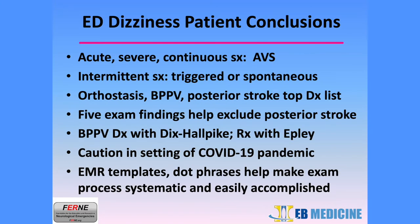When evaluating an ED patient with dizziness, please consider the following. Using the ATTEST system, those patients with acute, severe, continuous symptoms should be considered to have acute vestibular syndrome. Patients who have intermittent or non-continuous symptoms at the time of evaluation are noted to either have triggered or spontaneous episodes of dizziness and vertigo. Topping the list of diagnoses are orthostasis, BPPV or benign paroxysmal positional vertigo, and posterior stroke.